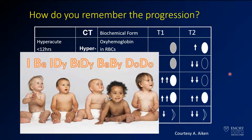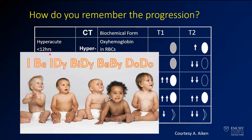What people have come up with is an absolutely idiotic mnemonic device — but I'll tell you about it because it is an easy way to remember. You've got to think about babies and poop. The mnemonic goes: IB, iddy, biddy, baby, doo-doo. For each time point, the first letter tells you the T1 appearance and the second tells you the T2 appearance — I is iso-intense, B is bright. So early, you have iso-intense on T1 and bright on T2.